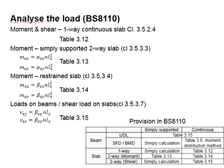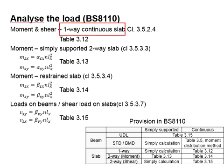This slide summarizes the list of tables in BS8110, which are used to determine the moment and shear loads acting on the slabs. Table 3.12 is used for a one-way continuous slab to determine the moment and shear loads.